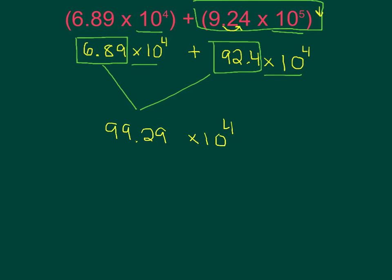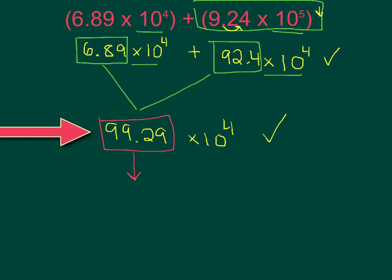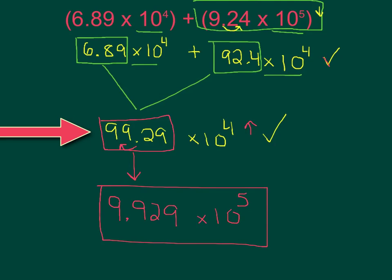The problem is that 99.29 times 10 to the power of 4 is not in proper scientific notation, because this front number is larger than 10. To rewrite it, the coefficient has to be between 1 and 10. So I change it to 9.929 — I decreased my number by one decimal place, so I have to increase my exponent by 1. That gives us 9.929 times 10 to the power of 5. So that right there is my final answer. Create like terms, add your coefficients, change back to proper scientific notation.